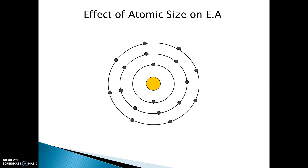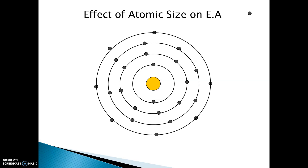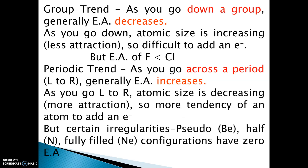Electron affinity of chlorine is more. For bromine, electron affinity is again less, and similarly for iodine, it will have less electron affinity than bromine. The trend in a period: as we go across a period from left to right, generally electron affinity increases, as atomic size is decreasing.